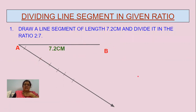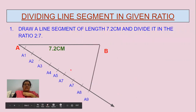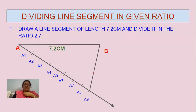We have marked the points A1, A2, A3 and so on, such that these line segments are of equal length — AA1 equal to A1A2 and so on up to A8A9. I have taken almost one centimeter radius and marked all these equal line segments on this ray.